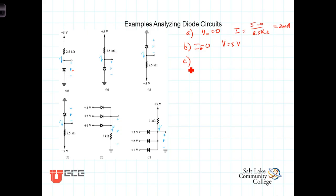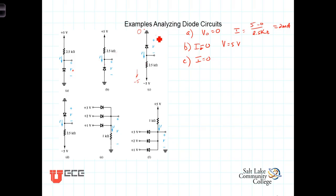Let's look at part C. Now we have a negative voltage source, so we have 0 volts at one end and negative 5 volts at the other. The voltage gradient would drive current in this direction, but the diode is connected so it doesn't allow current to flow that way. So the diode is an open circuit — current equals zero. With no current flowing, there's no voltage drop across the resistor, and the output voltage is pulled down to negative 5 volts.